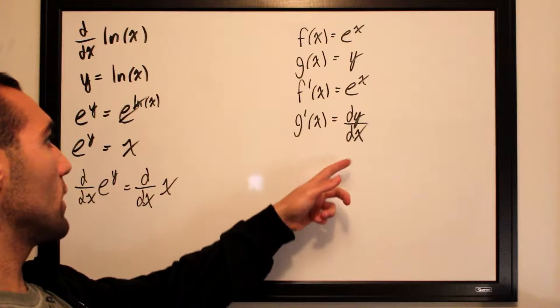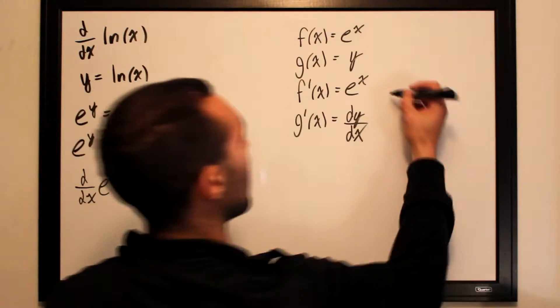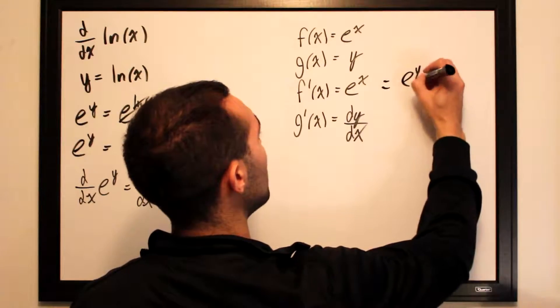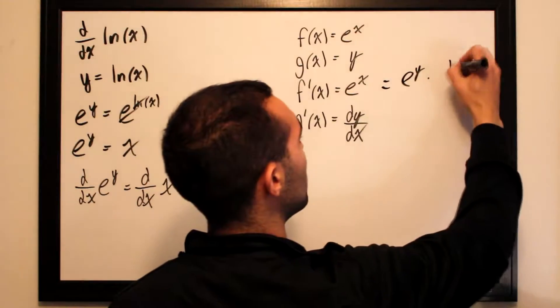So what we can do is take f prime, substitute in g wherever it is that we see x. So this will become e to the y and then multiply that entire expression by g prime which is dy by dx.